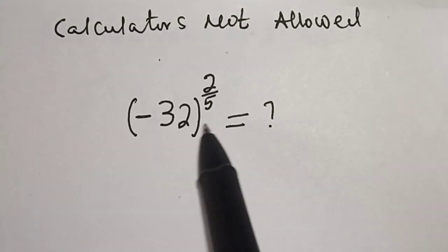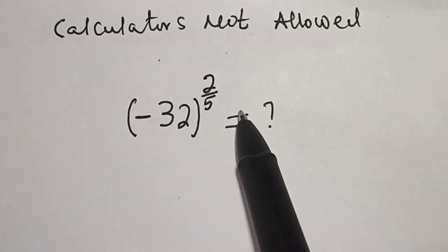Minus 32 raised to power 2 over 5 is equal to what? Hi everyone, welcome to my class. In this classroom we want to simplify this nice math question.